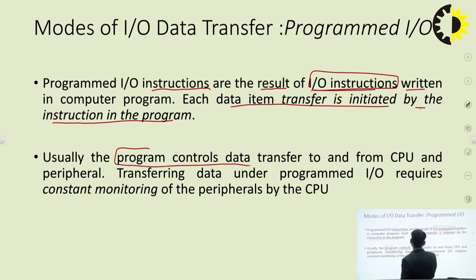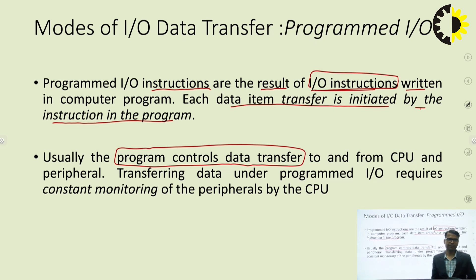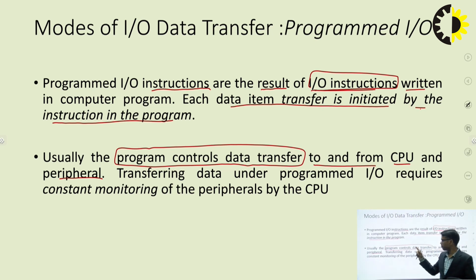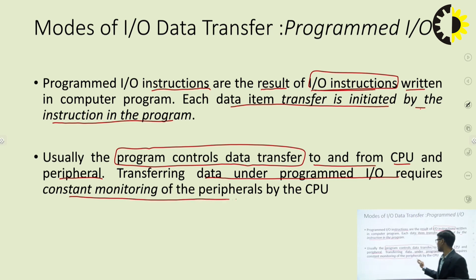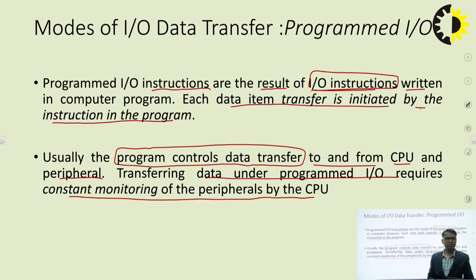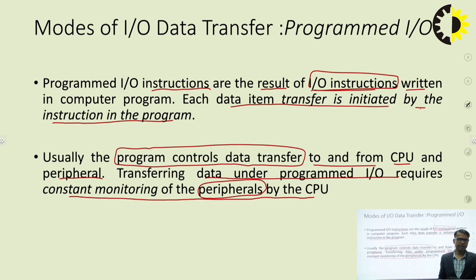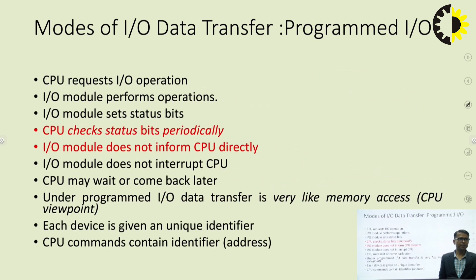Program controls this data transfer — the input/output is under the control of the program itself. This is done in both directions: to and from the CPU and the periphery. Transferring data under programmed IO requires constant monitoring of the peripherals by the CPU. When doing programmed IO, the CPU has to constantly monitor the peripherals — checking again and again whether data is available or not.